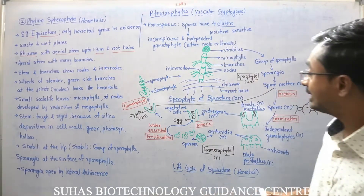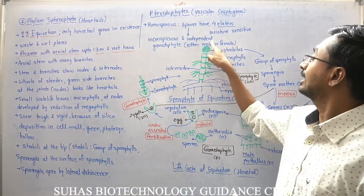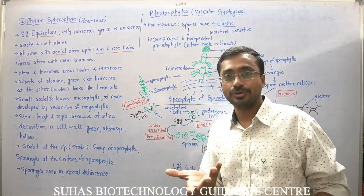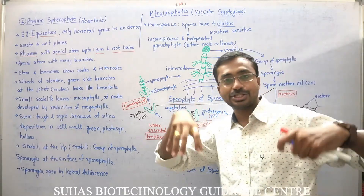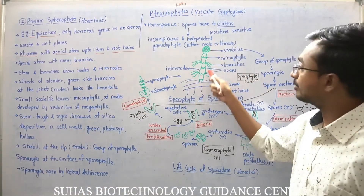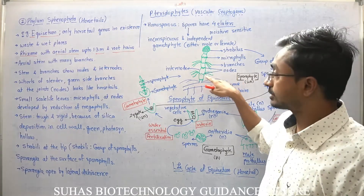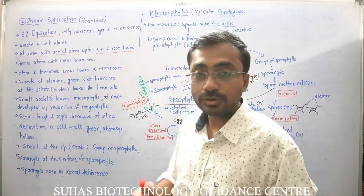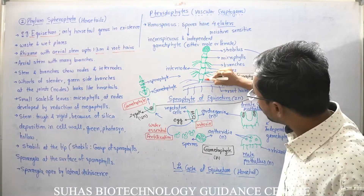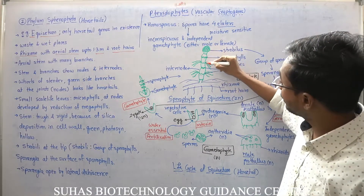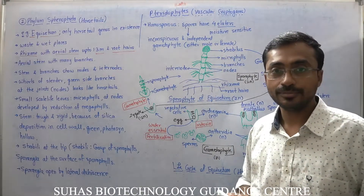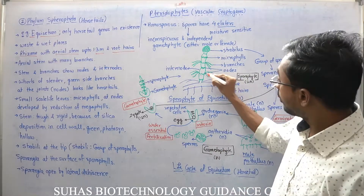Root hairs are also present. The rhizome is the underground structure and the aerial stem grows above. One fully grown plant is 1.3 meters tall. Root hairs arise from the rhizome — fixation is done by the rhizome and root hairs help in absorption. The aerial stem has many branches. These are not leaves; these are branches. The stem is divided into nodes and internodes. The distance between two successive nodes is the internode. From the nodes, branches arise.